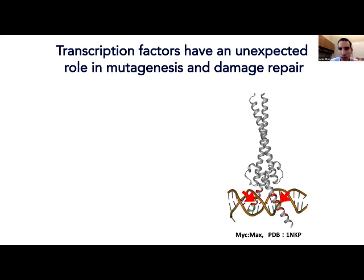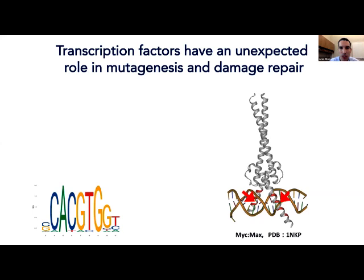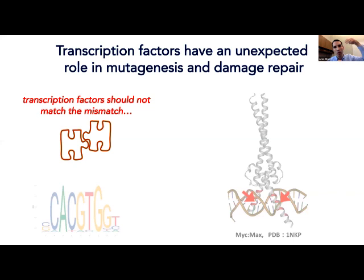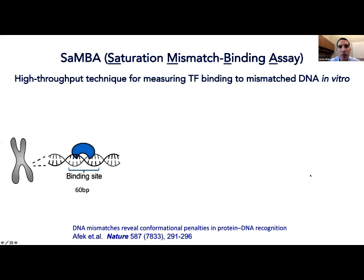Let's look at MYC. MYC recognizes a very specific particular set of sequences, such as CCCTG. If we make a mismatch, we would not expect MYC to match the mismatch — we would not expect a transcription factor to bind a mismatched or damaged DNA. So for that, we developed a method we call SAMBA: Saturation Mismatch Binding Assay. This is a high-throughput method to measure the effect of mismatches on transcription factor binding. All the details are in our paper, but briefly, we take binding sites of transcription factors — in this case, a 60-base-pair region from the genome — with the transcription factor binding site in the center.